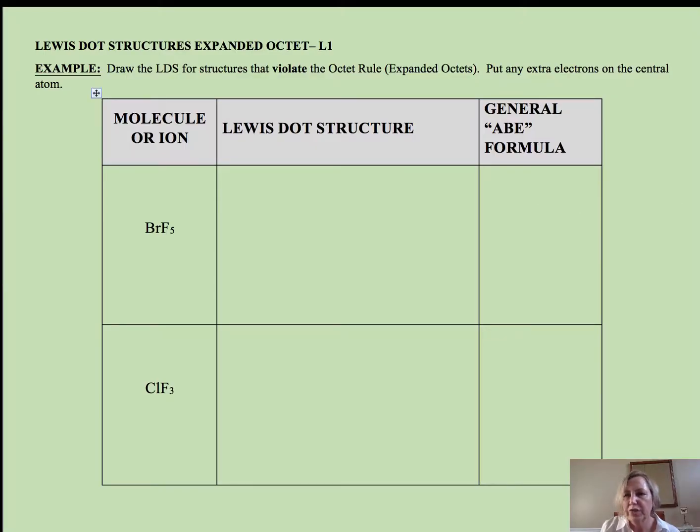Hi, thank you so much for joining me. In this video we are going to be working Lewis dot structures for molecules in which a central atom violates the octet rule by having an expanded octet. Hydrogen, beryllium, and boron violate...